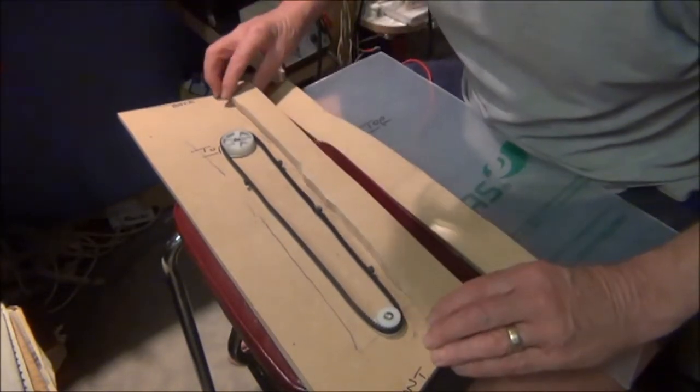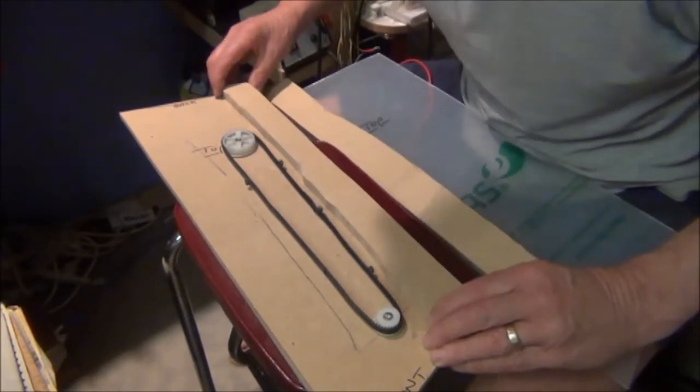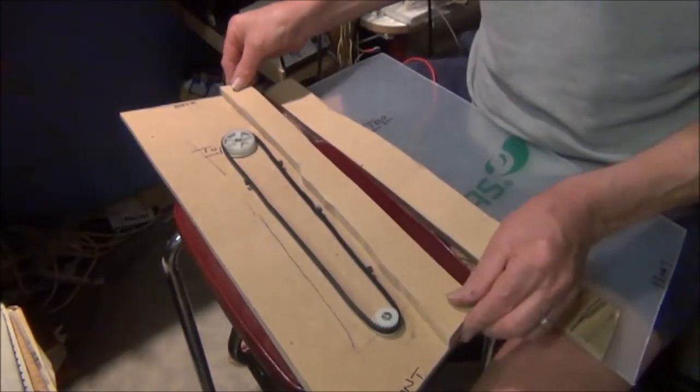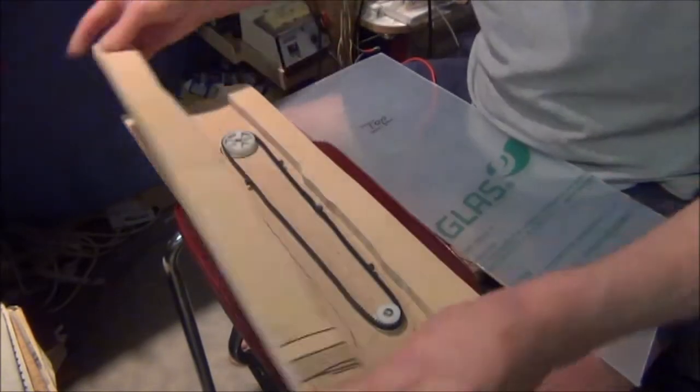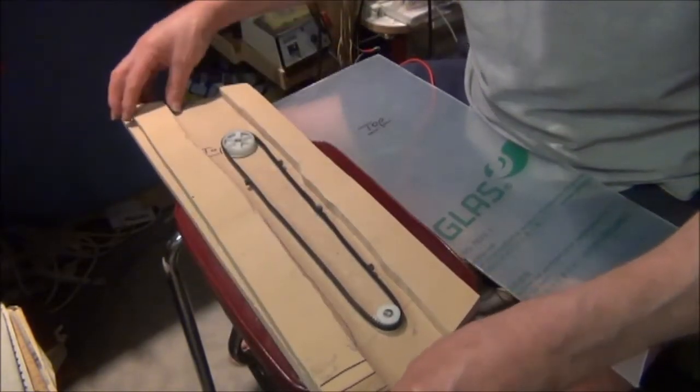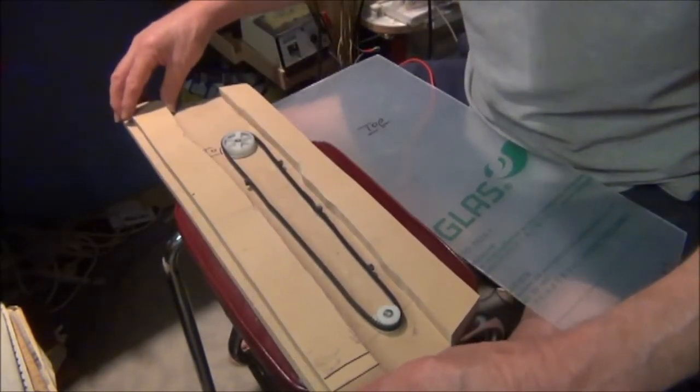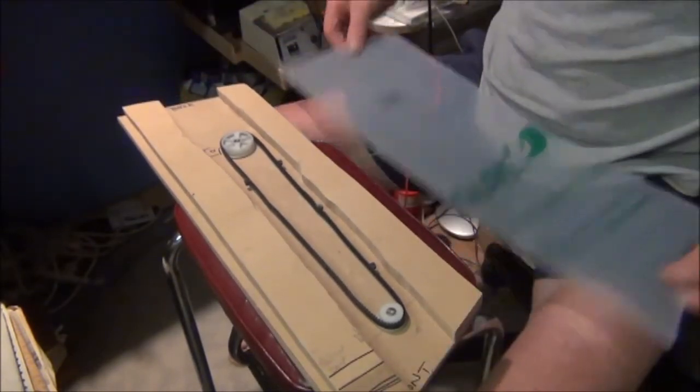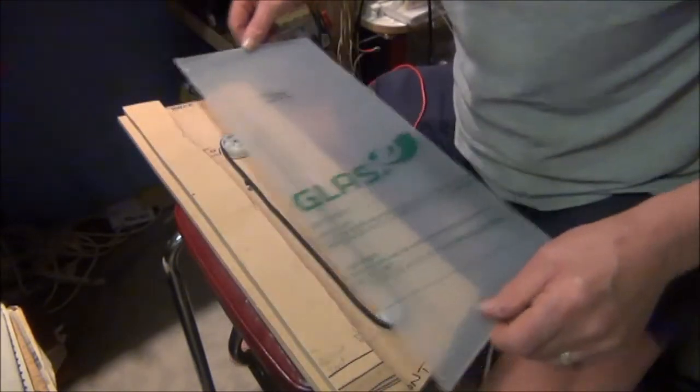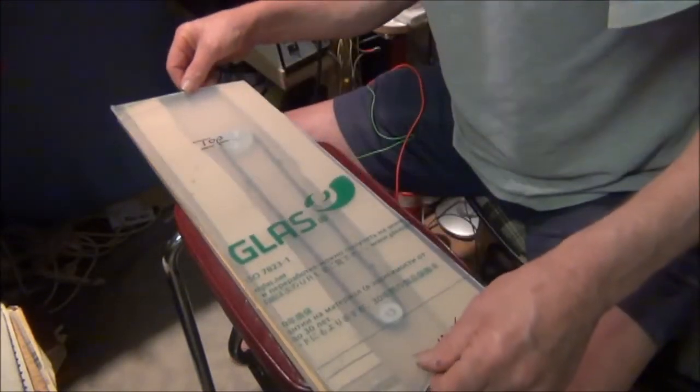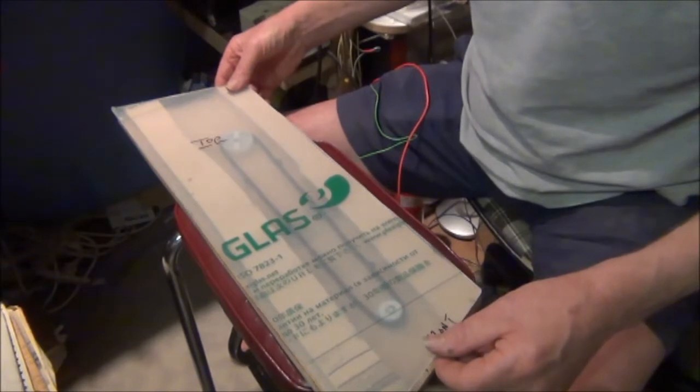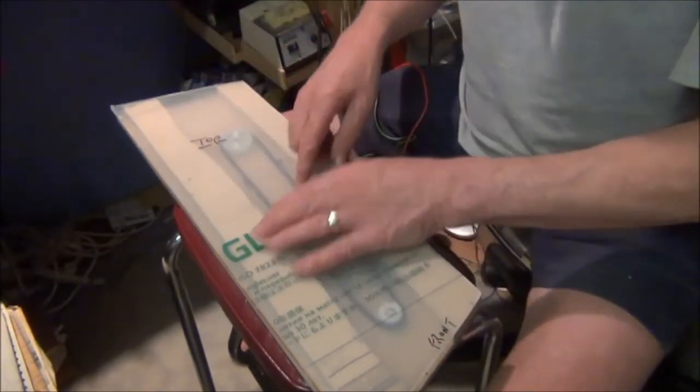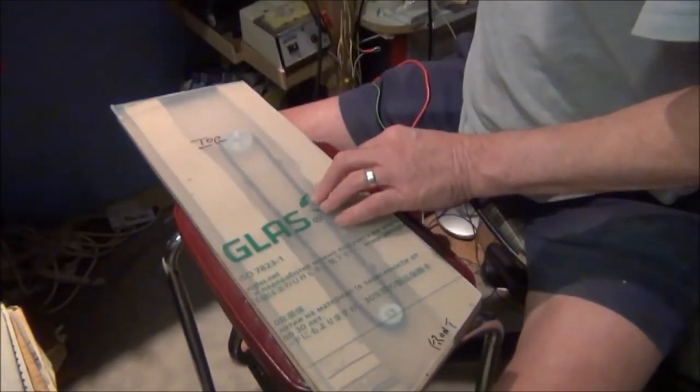We've got a bit of MDF, 12 mil, and that lines up along there. Another piece for the other side - I just hope these actually line up on the layer. Then we've got our canal top which just sits on there.